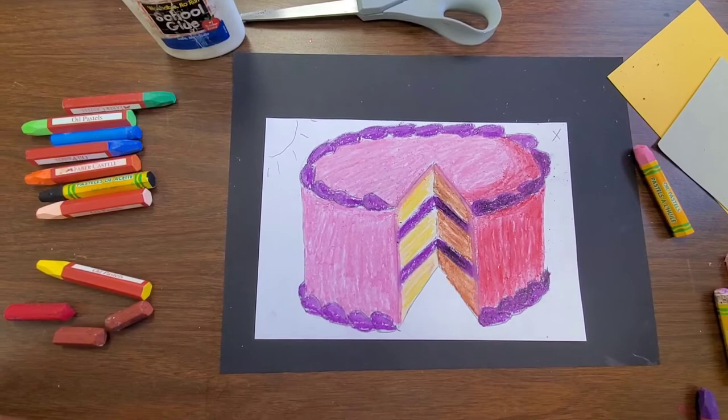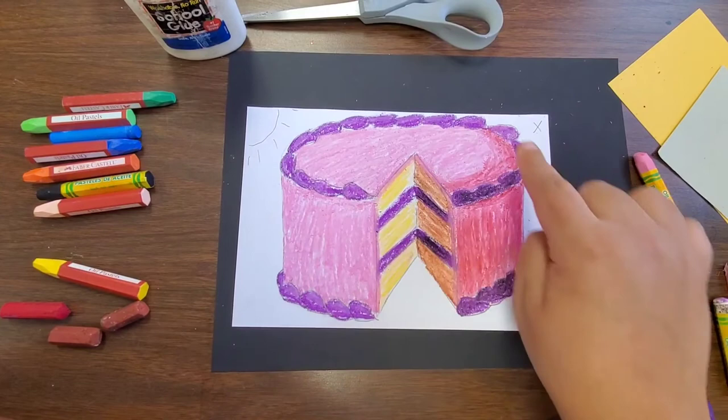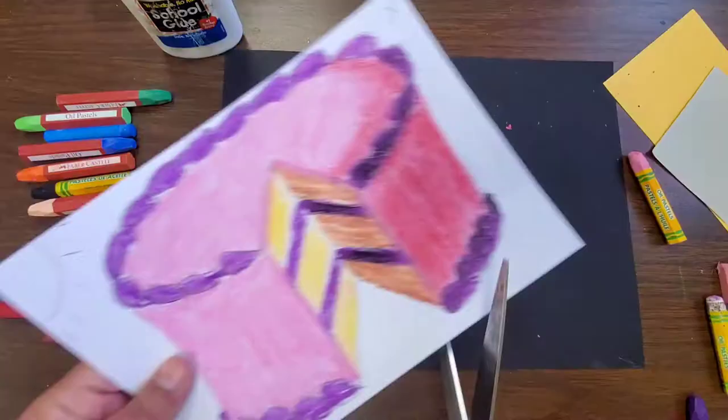After you get your coloring done, you're going to take a pair of scissors and you're going to cut out your cake shape from your white paper.